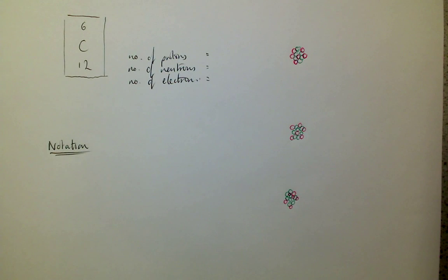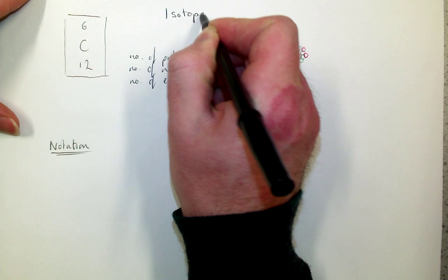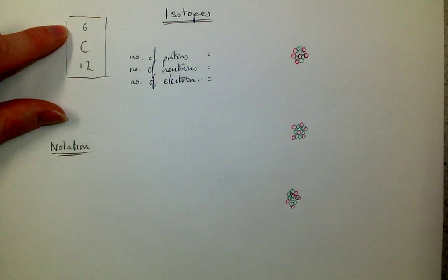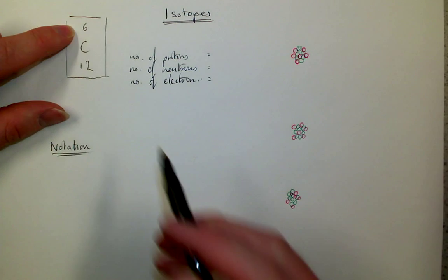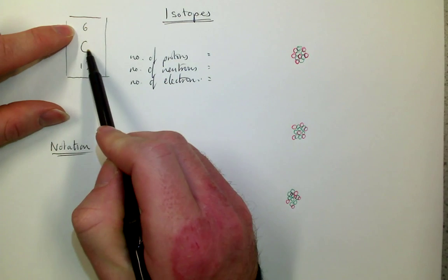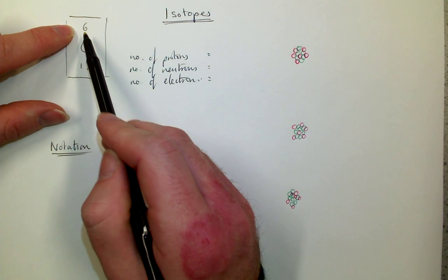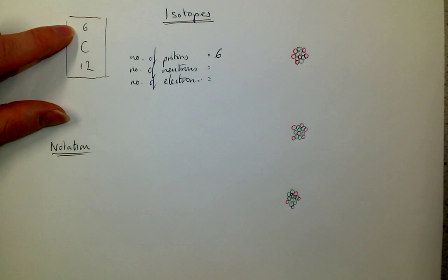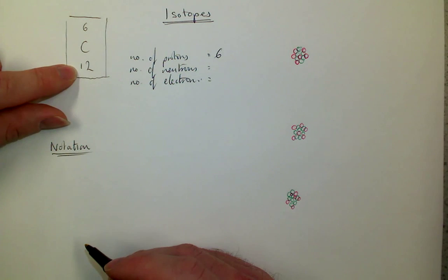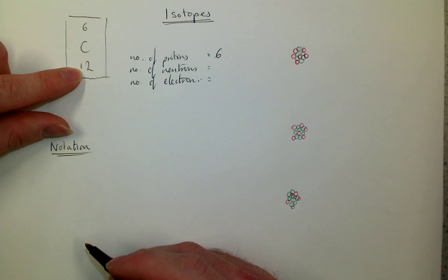This is the idea of different isotopes. Now remember from your chemistry that the number, the proton number or the atomic number, is the thing which determines which element it is. So carbon is always number six. Carbon always has six protons. And in the chemical periodic table, they always give you the average atomic mass, because carbon can have different numbers of neutrons.